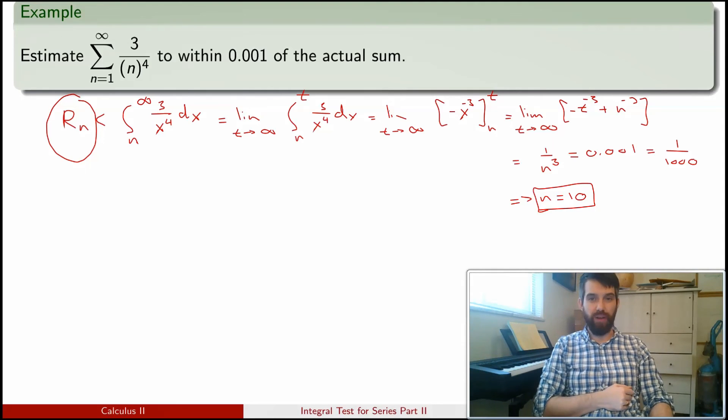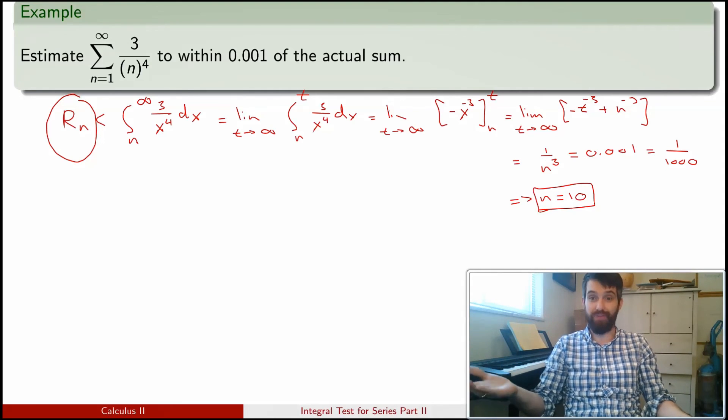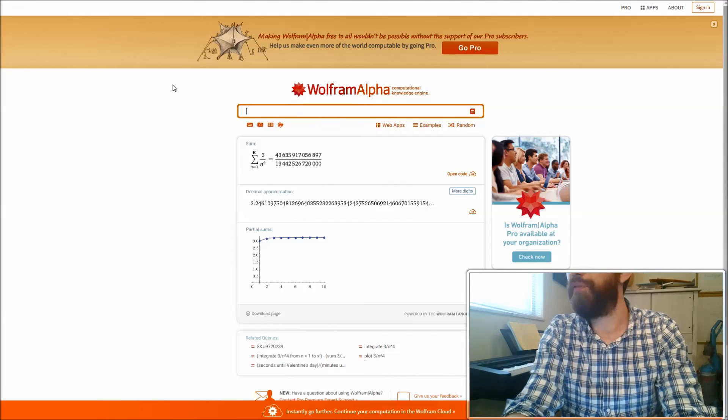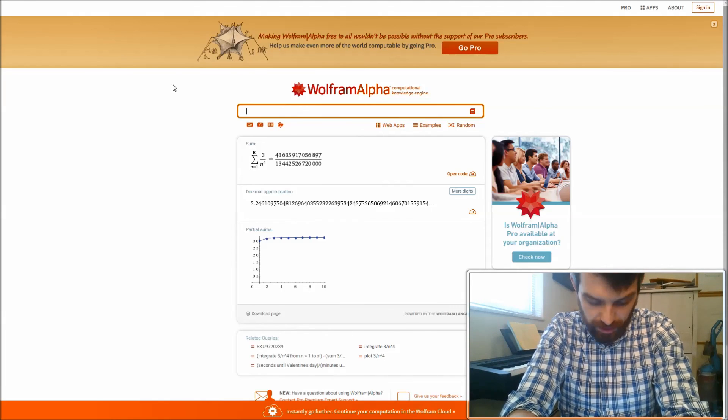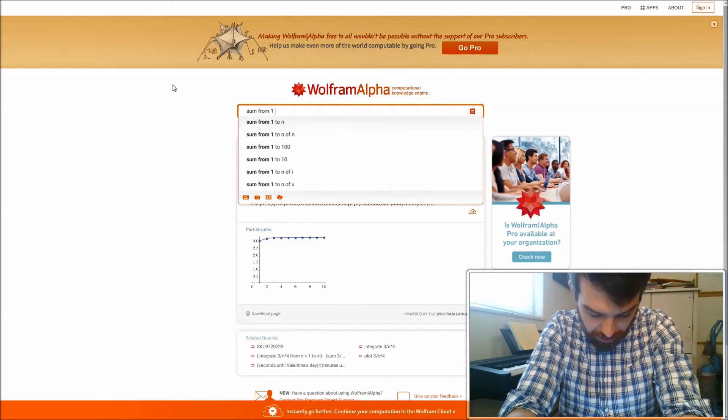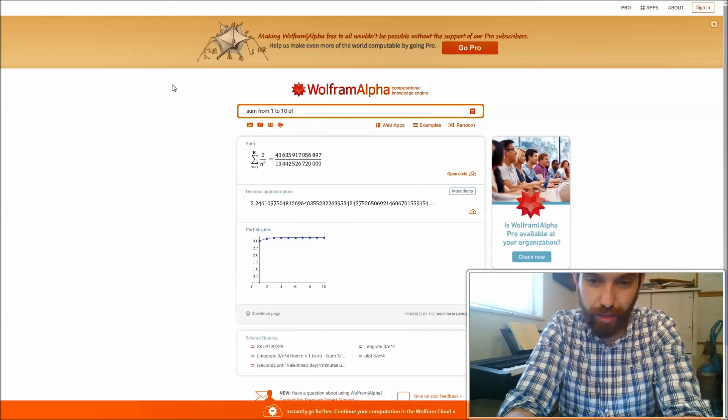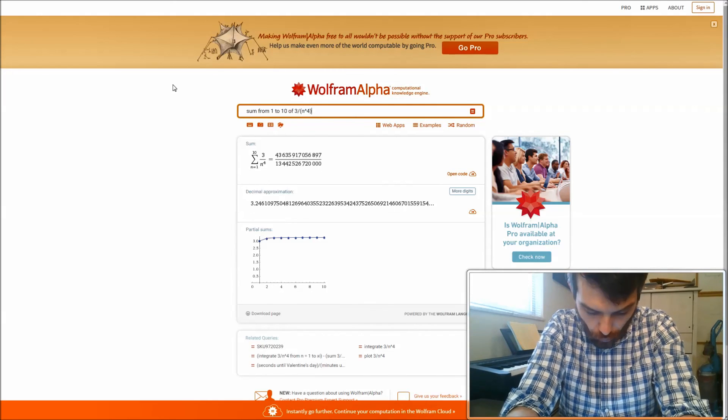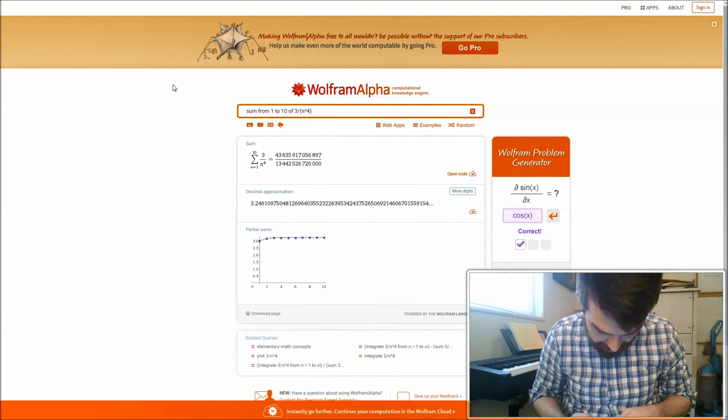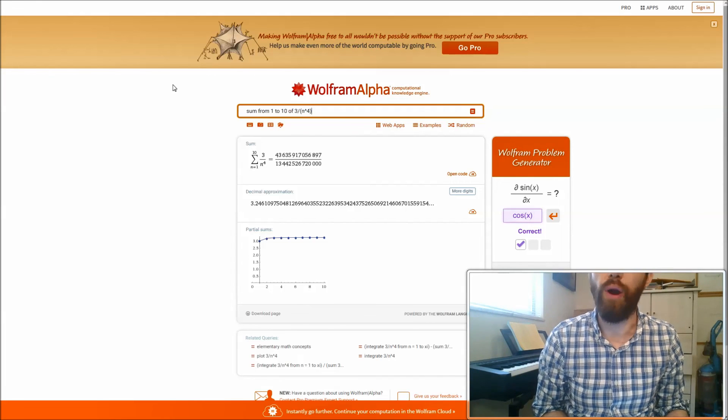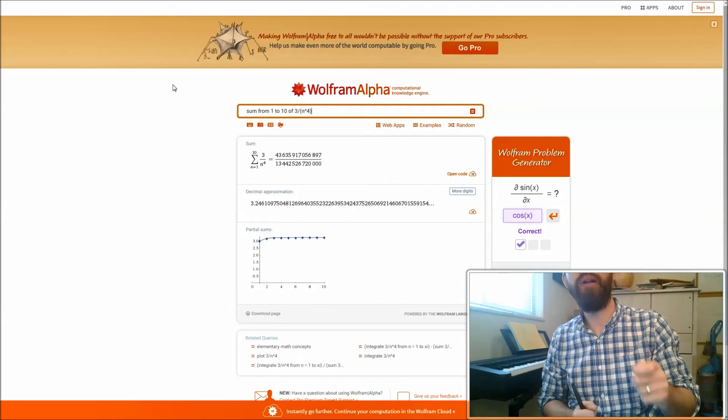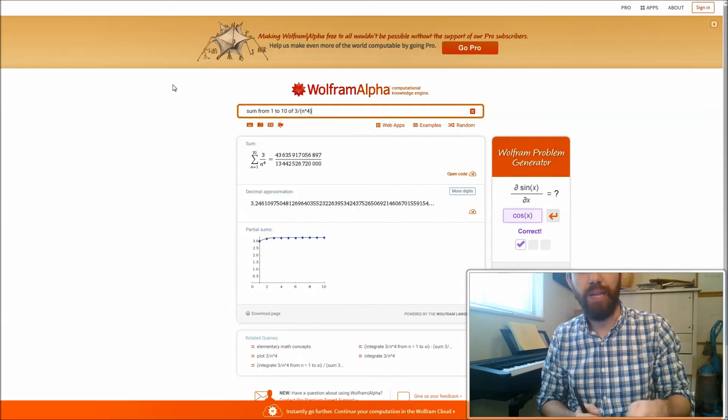Now, it's actually just a little pain, just from a calculator perspective, to go and compute what the sum of 10 different things are going to be. But I can use Wolfram Alpha to be able to do this. This is Wolfram Alpha, which is just a really powerful tool. You can do all sorts of different things, like integrals. But I'm going to do a sum. I'm going to do the sum from 1 to 10 of 3 divided by n to the power of 4, which was the sum that I was going to do. It goes away and computes it for me. It tells me that the value of this thing is equal to 3.246. In other words, 3.246 is within 0.001 of being the value of this series.